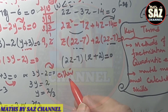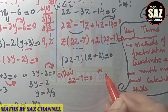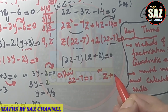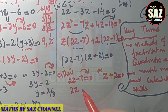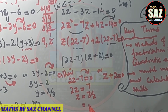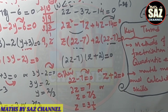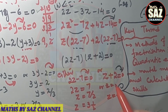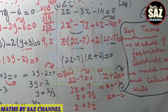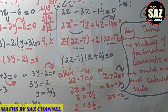Apply either-or condition: either 2z - 7 = 0 or z + 2 = 0. From the first equation: 2z = 7, so z = 7/2, which can also be written as 3½. From the second equation: z = -2. The two solutions are z = 7/2 or z = -2.